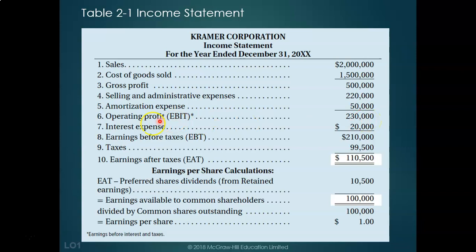In this case, earnings before interest and taxes would be $230,000. From EBIT we subtract interest expense — in this case $20,000 — which is the interest being charged on a bond the company has issued or a bank loan. That gives us earnings before taxes of $210,000. After deducting taxes of $99,500, our earnings after taxes are $110,500.